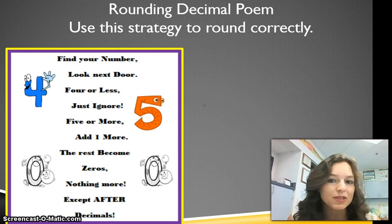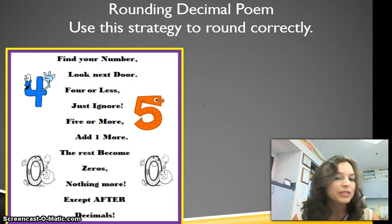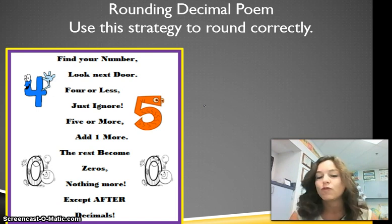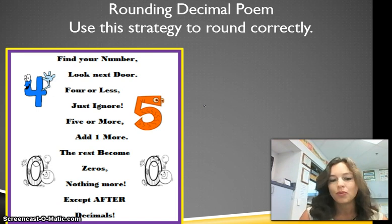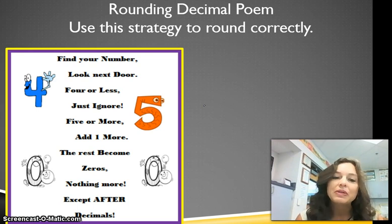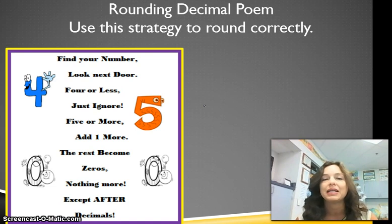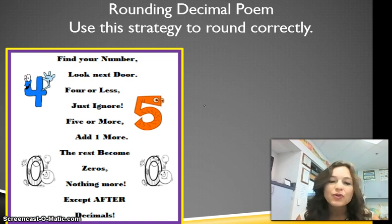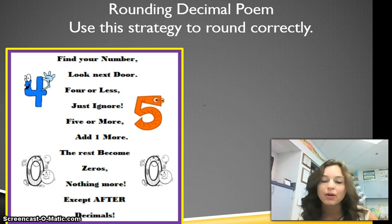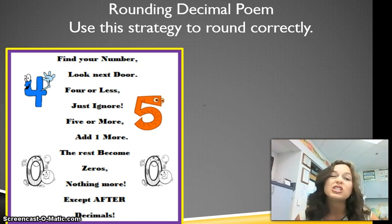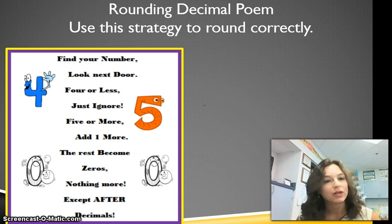Now let's talk about the rounding decimal poem again. Find your number, look next door, 4 or less, just ignore, 5 or more, add one more, the rest become zeros, nothing more, except after decimals. What that really means is you want to find the number you're rounding to, then look to the place value behind it. If it's 4 or less, keep that number the same and put zeros behind it. If it's 5 or more, jump that number up one digit and put zeros behind it.